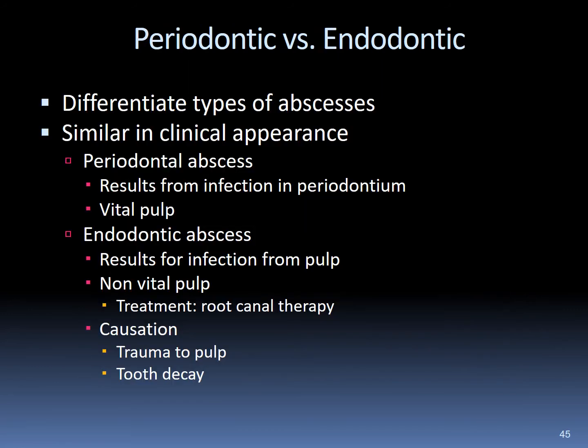There are differences between a periodontal abscess and an endodontic abscess. A periodontal abscess results from an infection in the periodontium that may then involve the pulp. An endodontic abscess results from an infection within the pulp, causing the pulp to become non-vital. Treatment of choice is root canal therapy or extraction, and causation is either trauma or tooth decay.